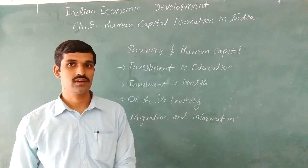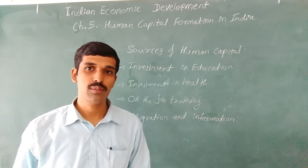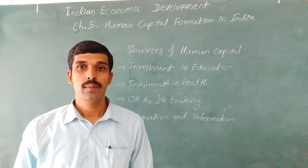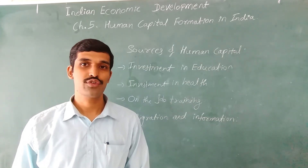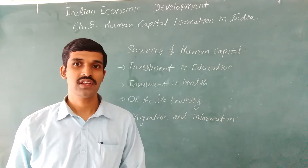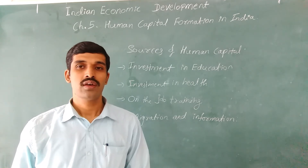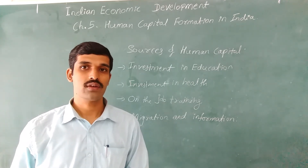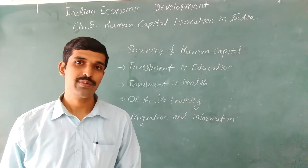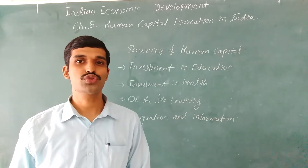The next source is on-the-job training. Many companies and institutions spend money on different training programs. These training programs help employees perform better. By providing training, companies and institutions make their employees more skilled and upgraded. Both on-the-job training and off-campus training help workers perform better. Better performance increases the productivity of institutions and also helps in earning better income. In this way, on-the-job training is also a source of human capital formation.